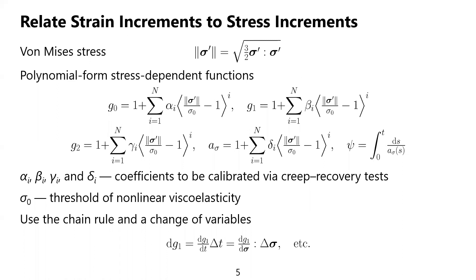We introduce the omissia stress, as shown at the top. We then choose polynomial form stress-dependent functions, as shown in the middle, where alpha_i, beta_i, gamma_i, and delta_i are coefficients to be calibrated via creep recovery tests, and sigma_O is the threshold of nonlinear viscoelasticity. We can obtain the bottom equation using the chain rule and the change of variables. With this equation, we can relate the strain increments to the stress increments.